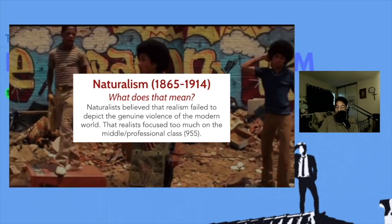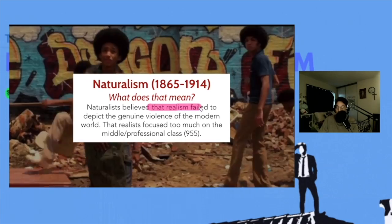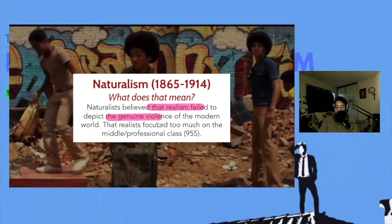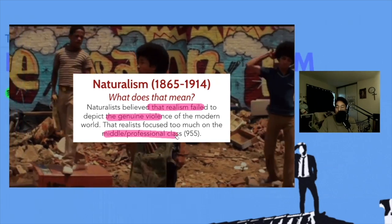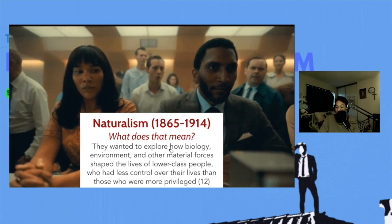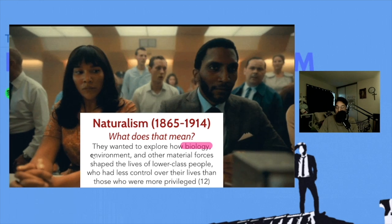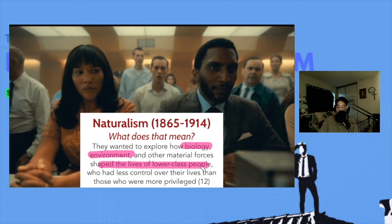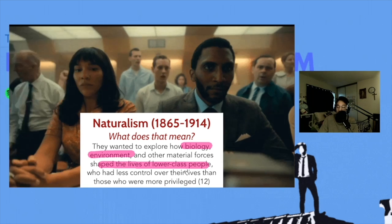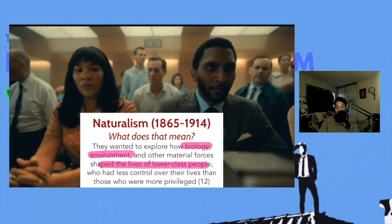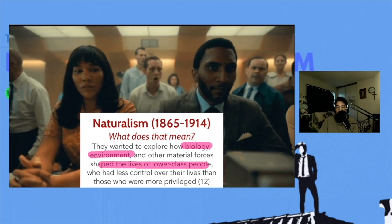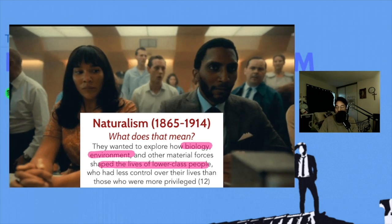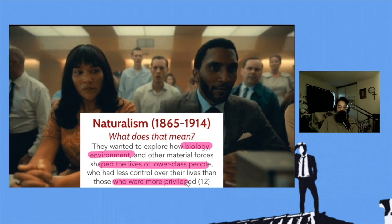So what does this mean? Naturalists believe that realism failed to depict the genuine violence of the modern world, and that realists focused too much on the middle and professional class. Naturalists wanted to explore how biology, the environment, and other material forces shaped the lives of lower class people, who had less control over their lives than those who were more privileged. So naturalists suggest that realism was never actually about capturing the everyday — that it was exclusive to one particular group, those who were more privileged.